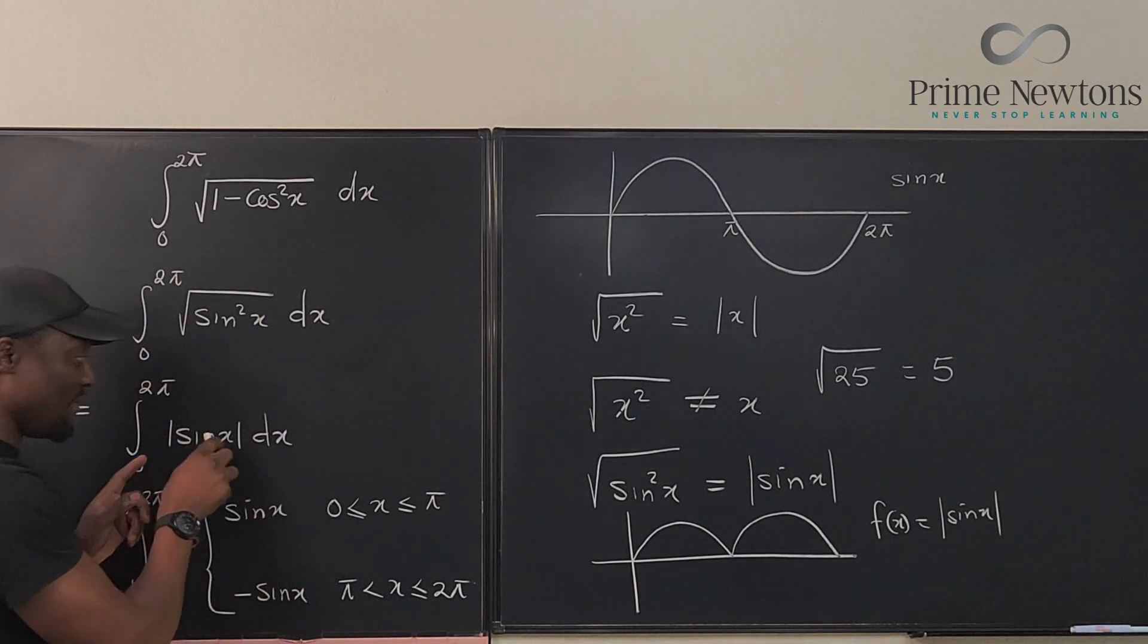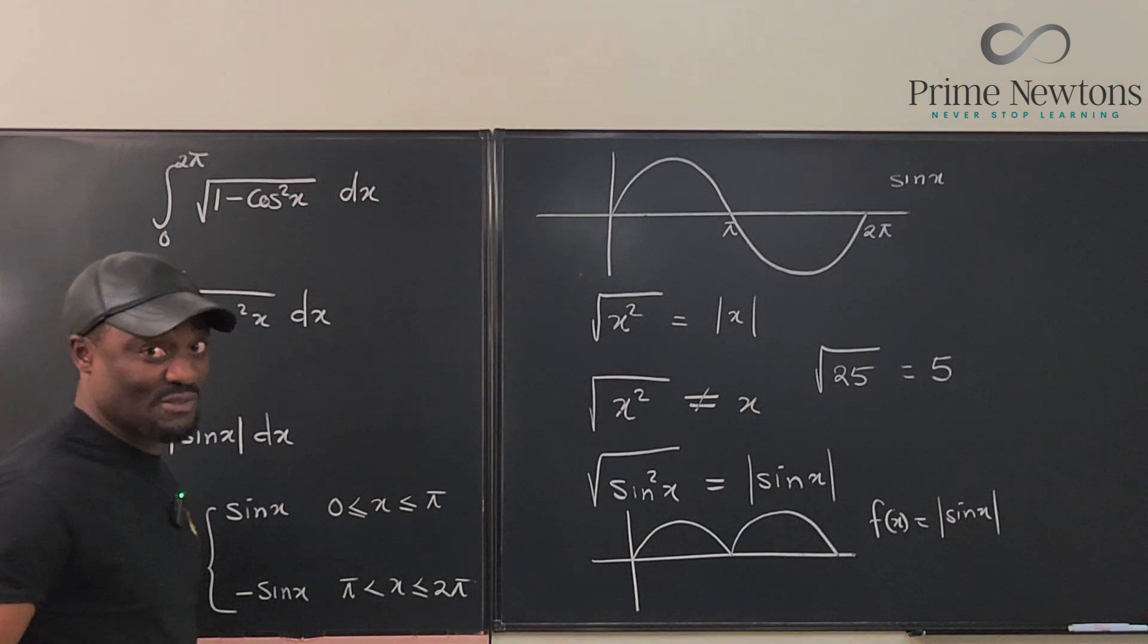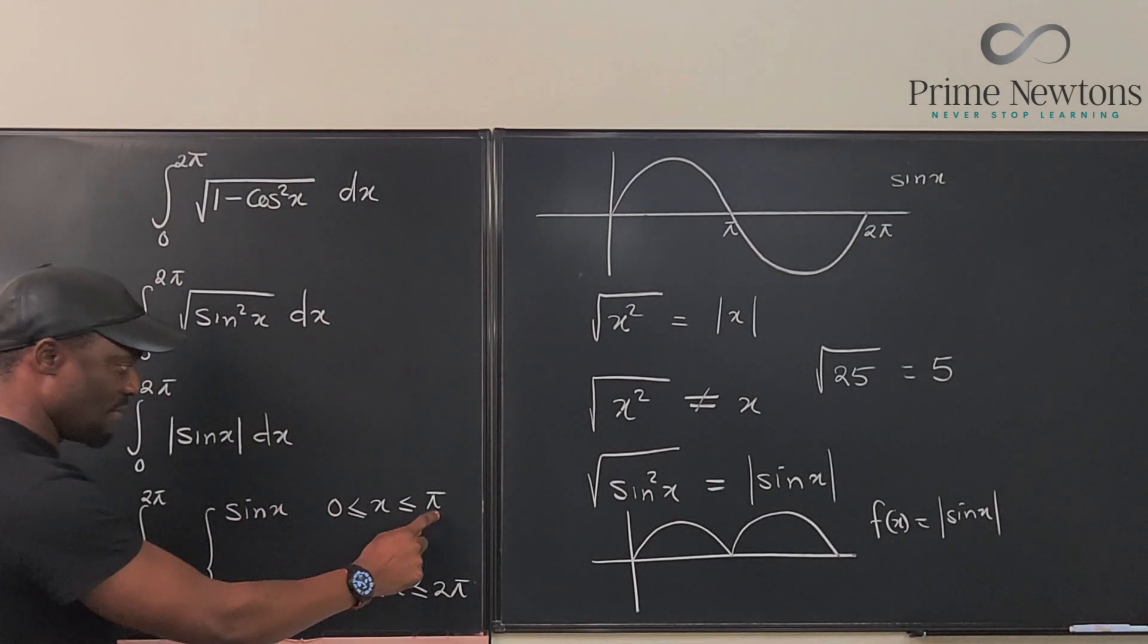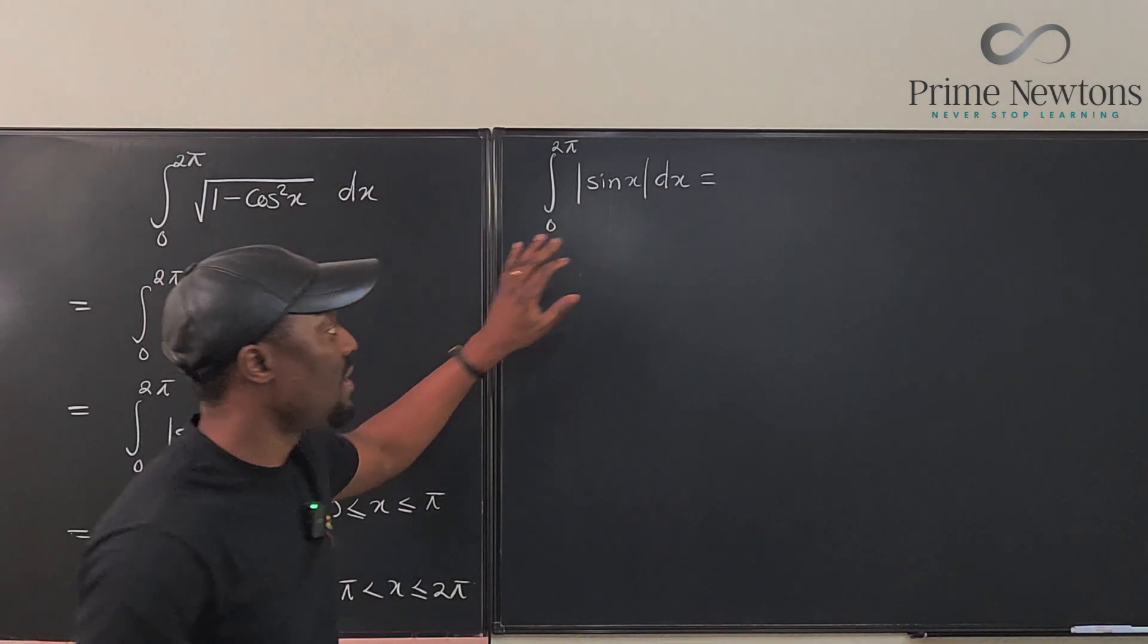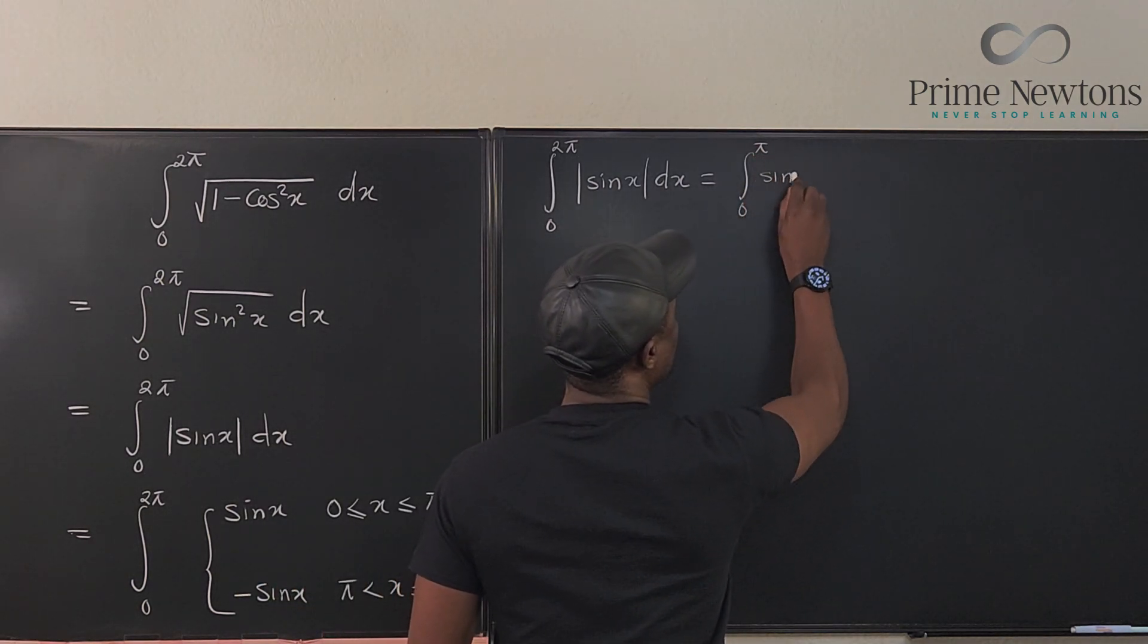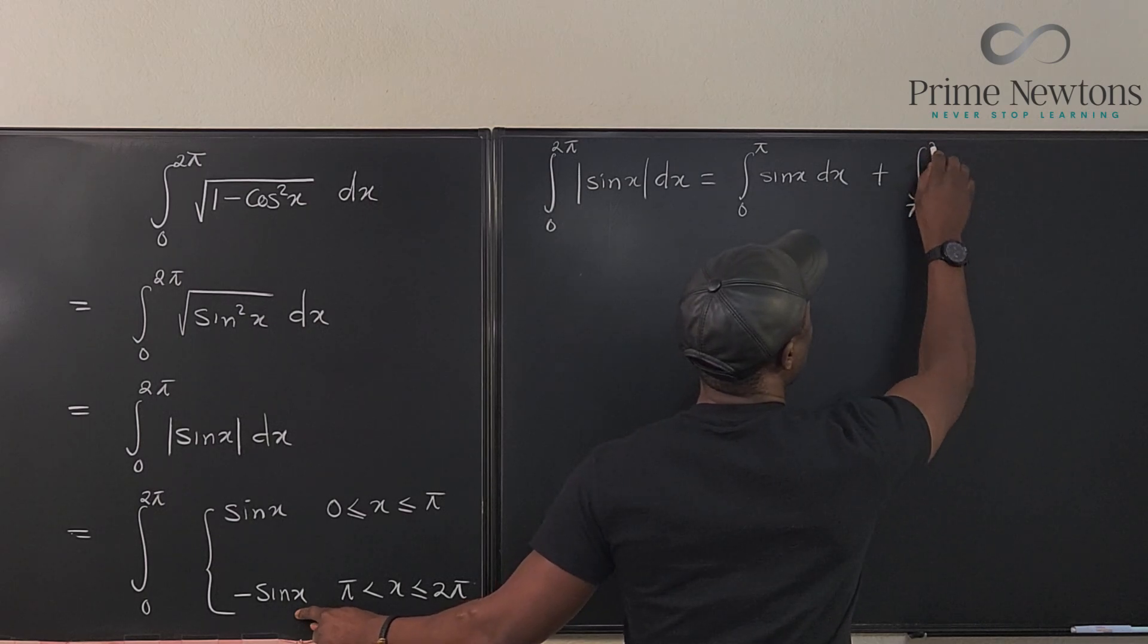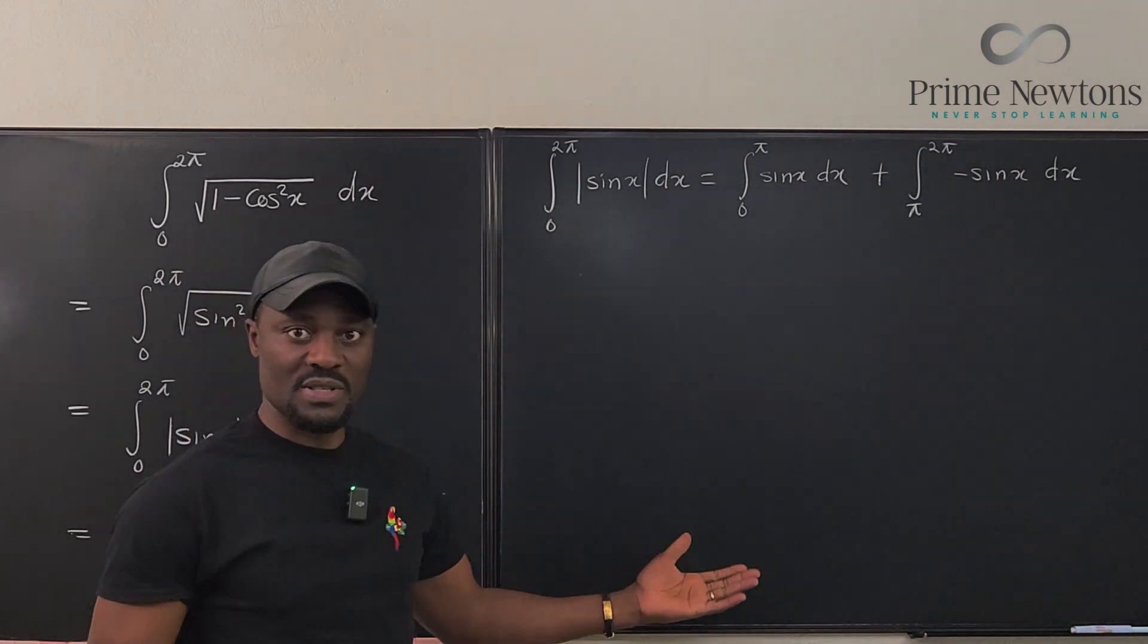Because if we had gone without the absolute value bars, you would have gotten some weird answers like zero, which doesn't make any sense. So how do we integrate this? We just have to create two integrals. One integral is the integral of this from zero to π, and then the integral of this from π to 2π. That's all. So this integral will be equal to the integral from zero to π of sine x dx, which is the top one, plus the integral from π to 2π of negative sine x dx. So these are the two options that we have.